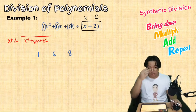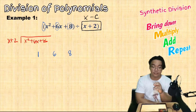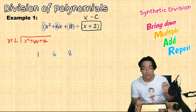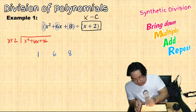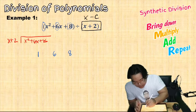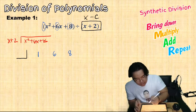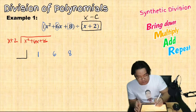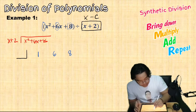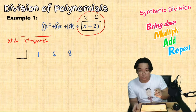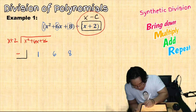So we have 1 for the coefficient of x squared, 6 for the coefficient of x, and 8 as our constant. Since the divisor is in the form of x minus C, we can apply synthetic division and C will be our multiplier. If x minus C equals x plus 2, then our C is negative 2.